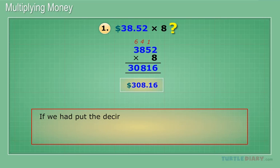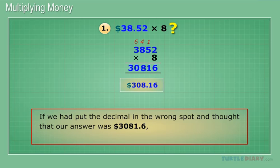If we had put the decimal in the wrong spot and thought that our answer was 3081.6, we would know that this is not even close.